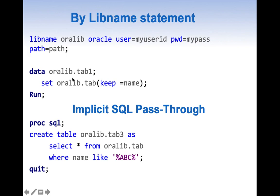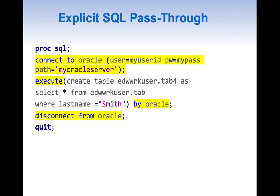With the help of LIBNAME we can access Oracle tables and also create an Oracle table. The same thing can be done using regular PROC SQL, and this is popularly known as implicit SQL pass-through. Another way to access Oracle tables through SAS is known as explicit SQL pass-through, wherein we send the queries directly to Oracle.